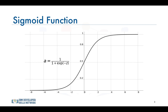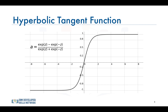This brings us to the next activation function: the hyperbolic tangent, or tanh function. It's very similar to the sigmoid function — it's actually just a scaled version of the sigmoid — but unlike the sigmoid function, it is symmetric over the origin and ranges from negative 1 to positive 1. However, although it overcomes the lack of symmetry of the sigmoid function, it also leads to the vanishing gradient problem in very deep neural networks.